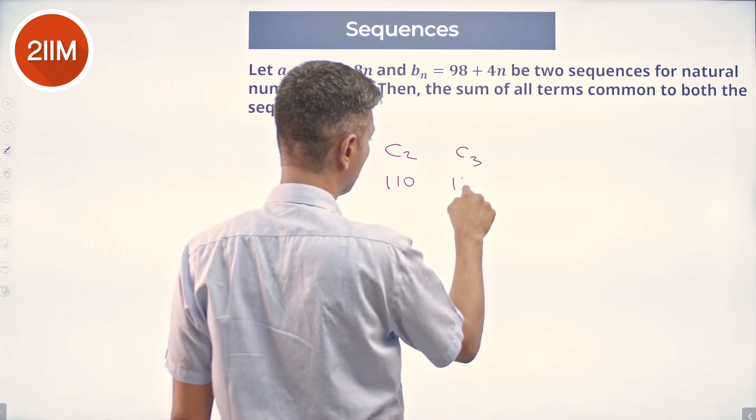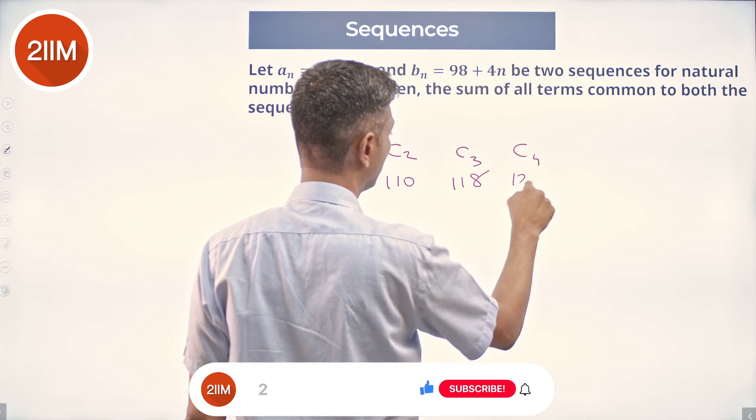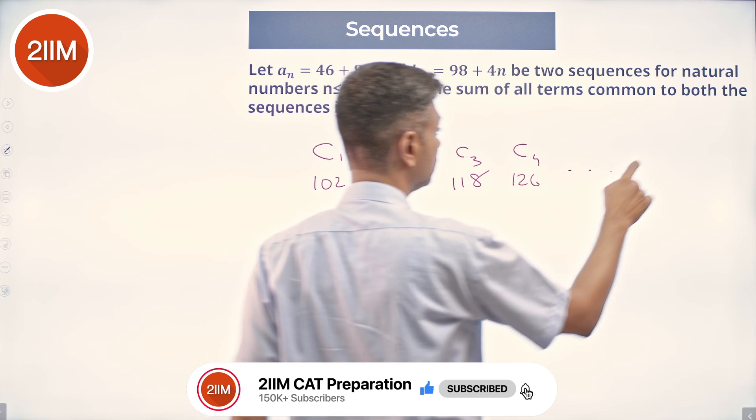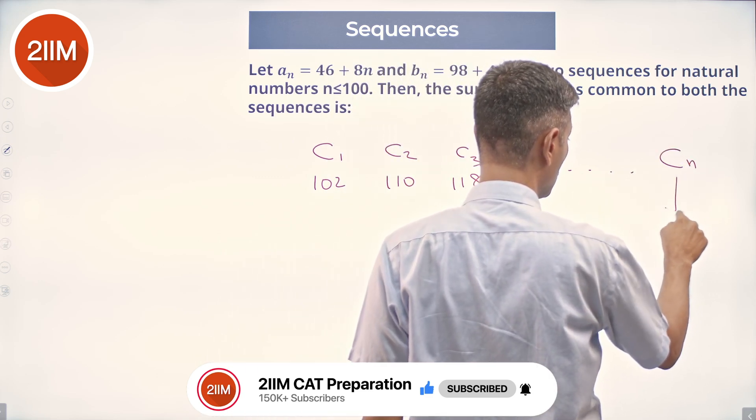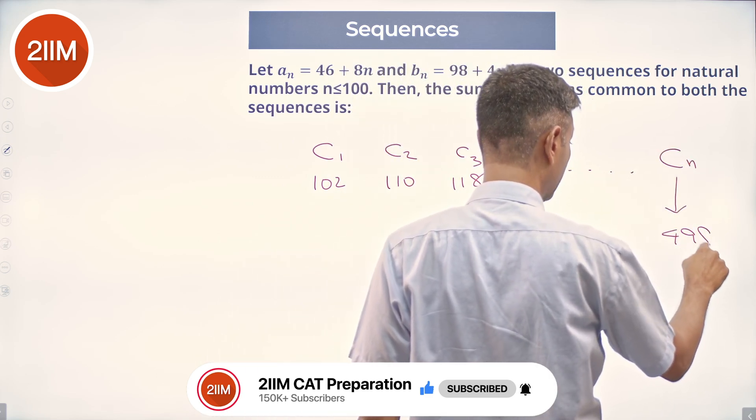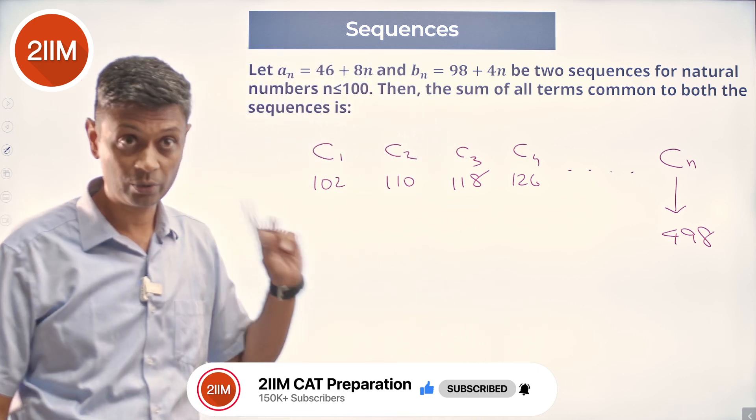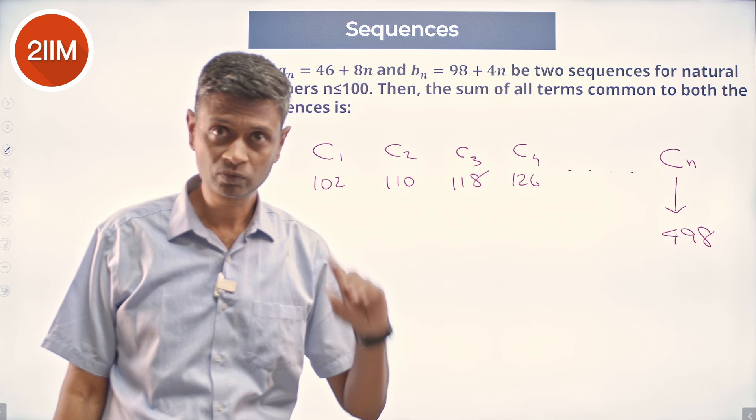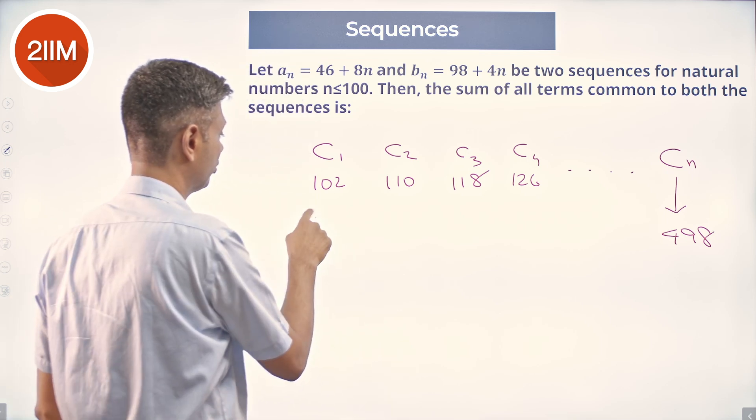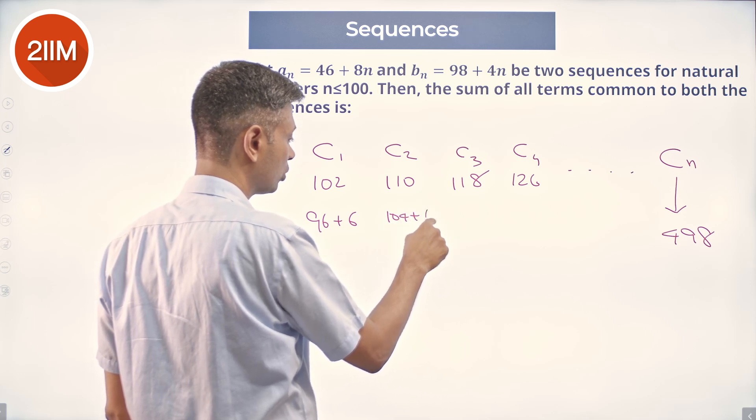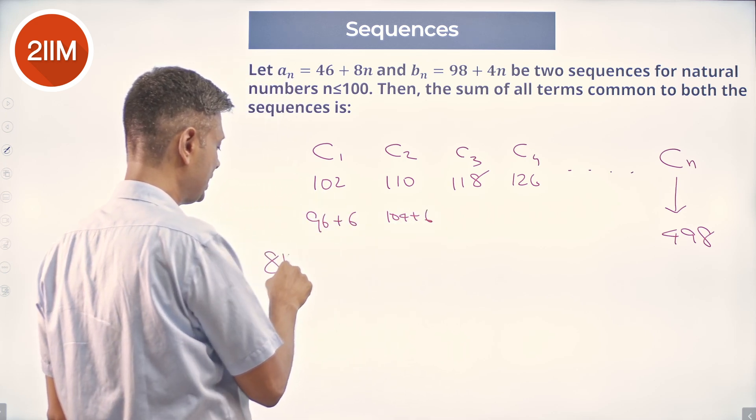C_3 is 118, C_4 is 126, and so on, till C_n which could be 498, may not be 498, need not be an element in the sequence. This goes step size of 8. This is 96 plus 6, this is 94 plus 8. So each number here is of the form 8k plus 6.